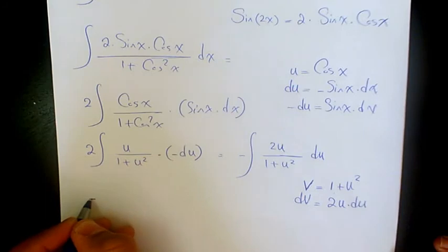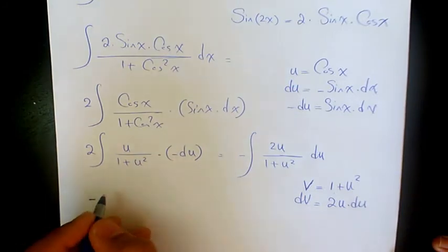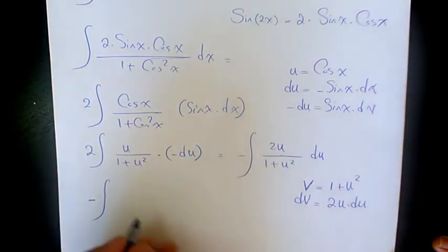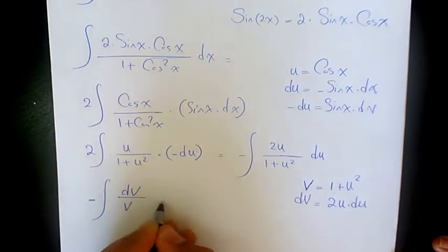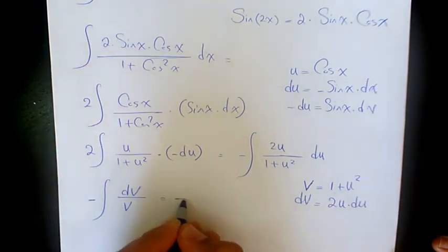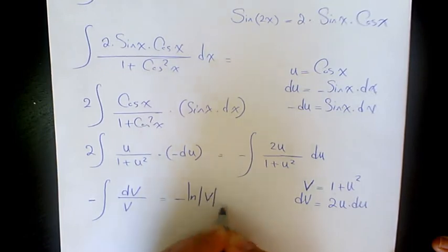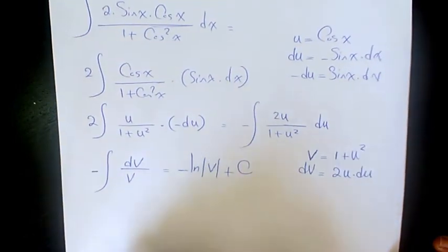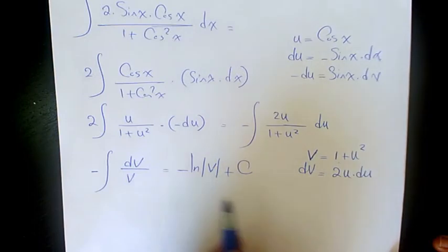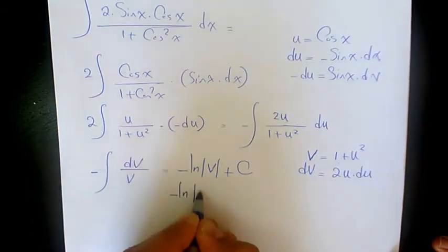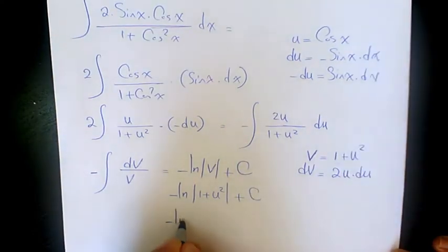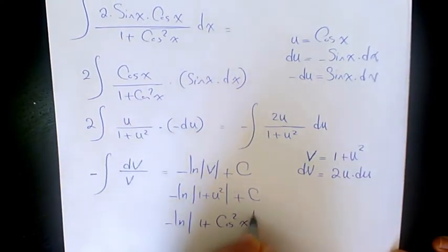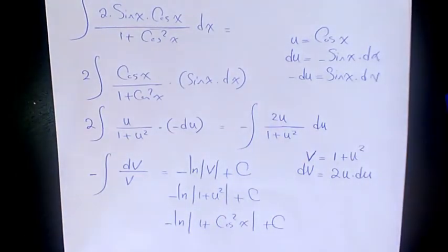Then, when you sub it there, we have negative 2u du is going to be dv, and 1 plus u squared is going to be v. So, when you find an integral, it's going to be negative ln v plus a constant number. So, v is 1 plus u squared plus c, and u is cosine x. Negative ln 1 plus cosine squared x plus a constant number.